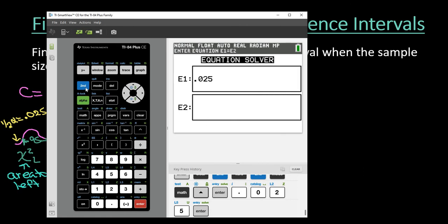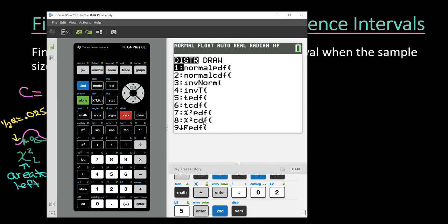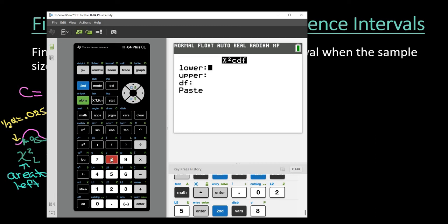And then what I'm going to do is I'm going to go into my second distribution and I'm going to go find chi square CDF. Make sure you select chi square CDF which is option 8. You can either arrow down until you get to 8 and hit enter or I like to just push the number button so I would just put 8.